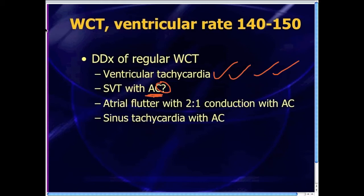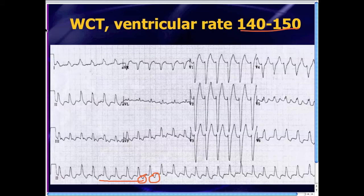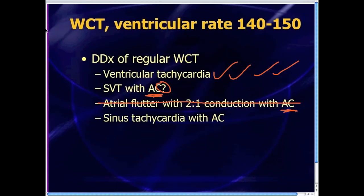Atrial flutter with 2-to-1 conduction can produce a regular tachycardia, and if that atrial flutter has aberrant conduction, that'll give you a regular wide-complex tachycardia. Looking back at this 12-lead, is there any evidence of atrial flutter? Do you see flutter waves mapping out at a rate of about 300 beats per minute? It kind of looks like there's a little sawtooth going on, but those complexes map out to a rate of about 140 to 150 — too slow to be atrial flutter. So we can probably rule out atrial flutter with 2-to-1 conduction, and we're really doubting SVT with aberrant conduction as well.